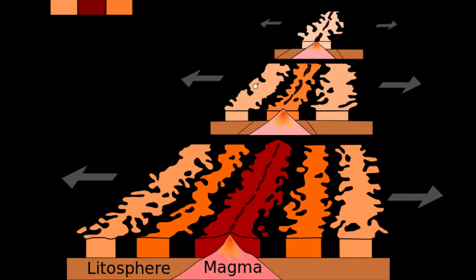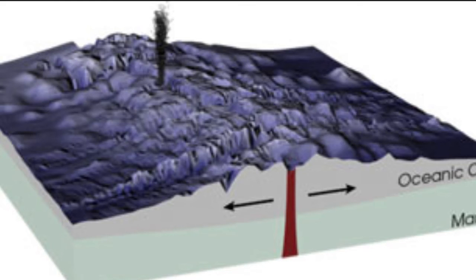By contrast, fast spreading ridges like the East Pacific Rise, EPR, are narrow, sharp incisions surrounded by generally flat topography that slopes away from the ridge over many hundreds of miles. The overall shape of ridges results from thermal isostasy; close to the ridge axis there is hot, low-density mantle supporting the oceanic crust. As the oceanic plates cool away from the ridge axis,